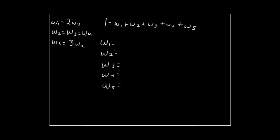Over here we have w1 equals 2 times w2; w2 equals w3 equals w4, so all these probabilities are equal to each other; and w5 equals 3 times the weight of outcome 2.